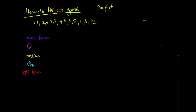Hey guys, so today I'm going to be showing you how to draw what is called a box plot. It pretty much wraps up everything we've looked at so far in terms of spreads and measures of central tendency. We use our lower fence and our upper fence from outliers, we use our median, and we use our upper quartile Q3 and our lower quartile Q1 from our IQR.